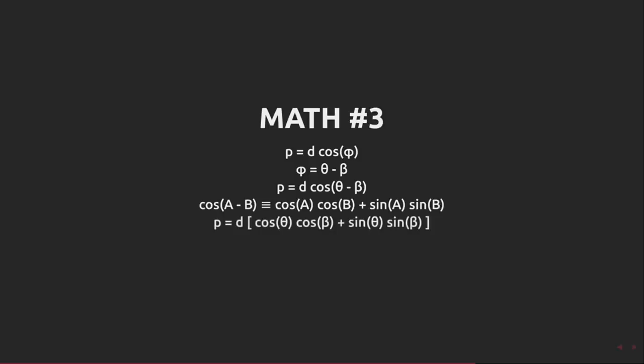Substituting in for our p equation, we get p equals d times cos theta cos beta plus sin theta sin beta. Multiplying this out, p is d cos theta cos beta plus d sin theta sin beta. Now the magic happens.